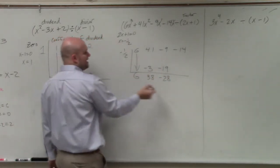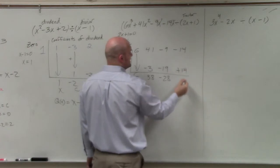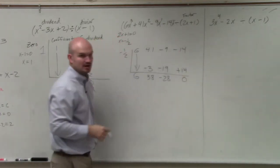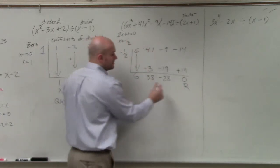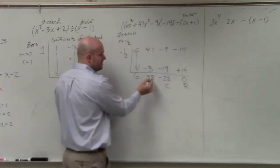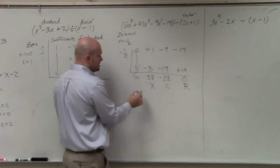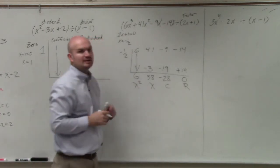Then again, multiply on the diagonal. Positive 14. Add them up, you get a 0. So therefore, again, that's your remainder. The next to last term is your constant. This is the coefficient of your linear term. This is the coefficient of your quadratic term.